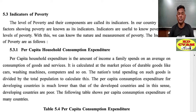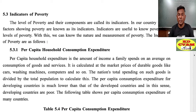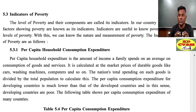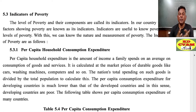Good morning students. This is Economics Standard 12, Chapter 5, continuation — Topic 5.3: Indicators of Poverty. I hope you have seen the previous two videos. Please keep watching, and if you like it, please share or subscribe. Let's start. Indicators of poverty is a very important question — worth 5 marks or 3 marks if it comes in the exam.